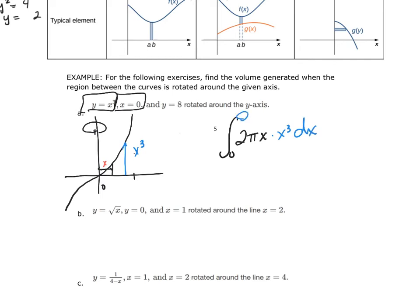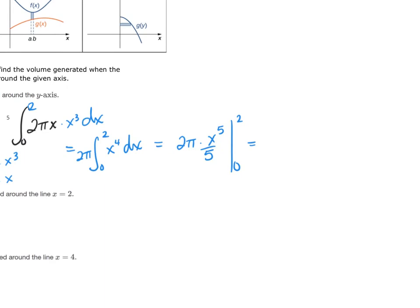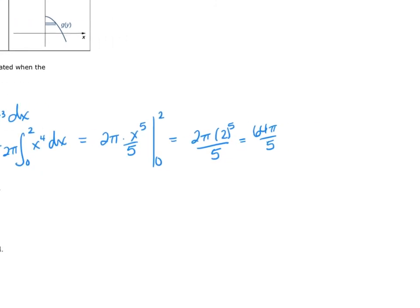Integrating x⁴ gives 2π times (x⁵/5) evaluated from 0 to 2. Putting in x = 2: 2π times (2⁵/5) = 2π times (32/5) = 64π/5. The final answer is 64π/5 units cubed.